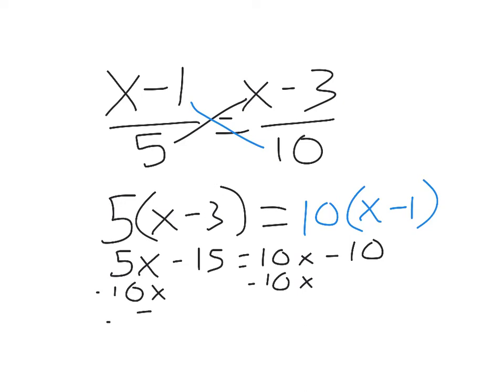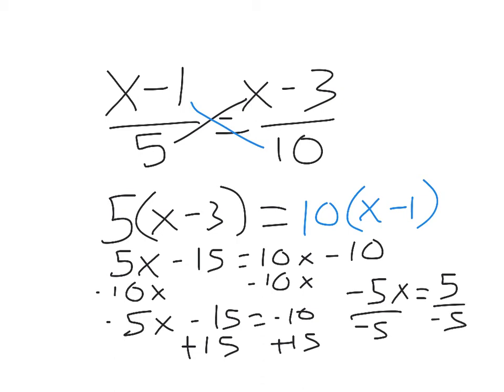So now I have negative 5x minus 15 equals negative 10. I have the constant of 15. Negative 5x then equals 5. Divide by negative 5, and we have x equals negative 1.